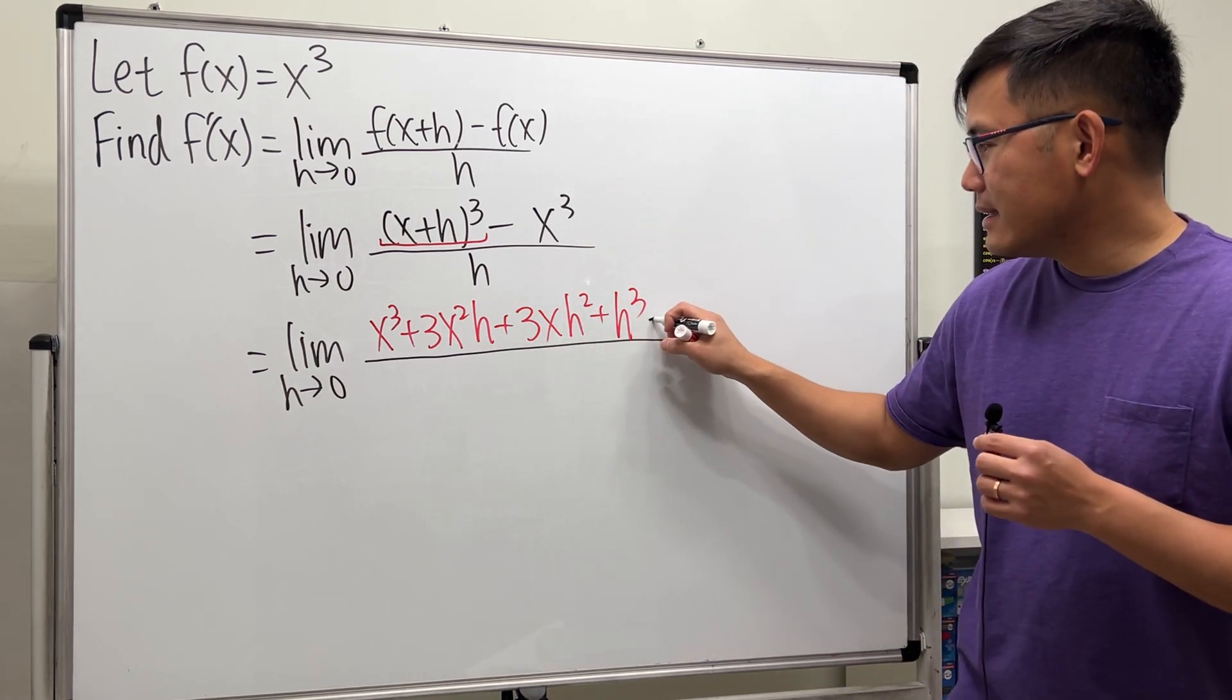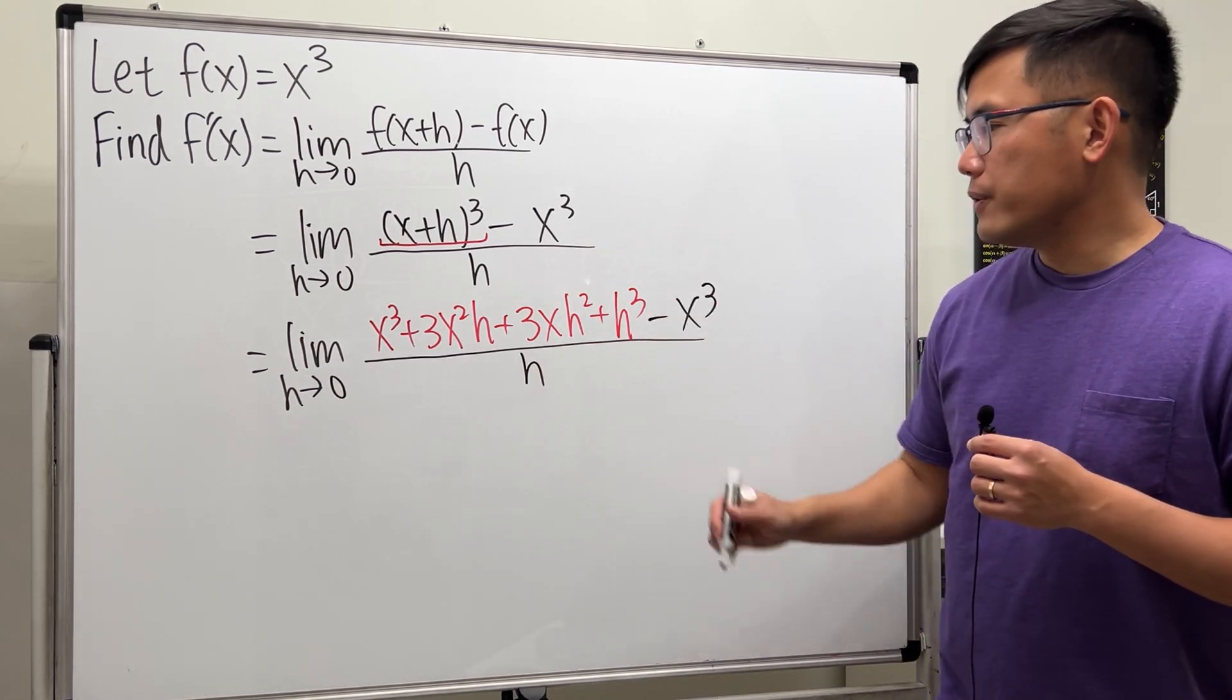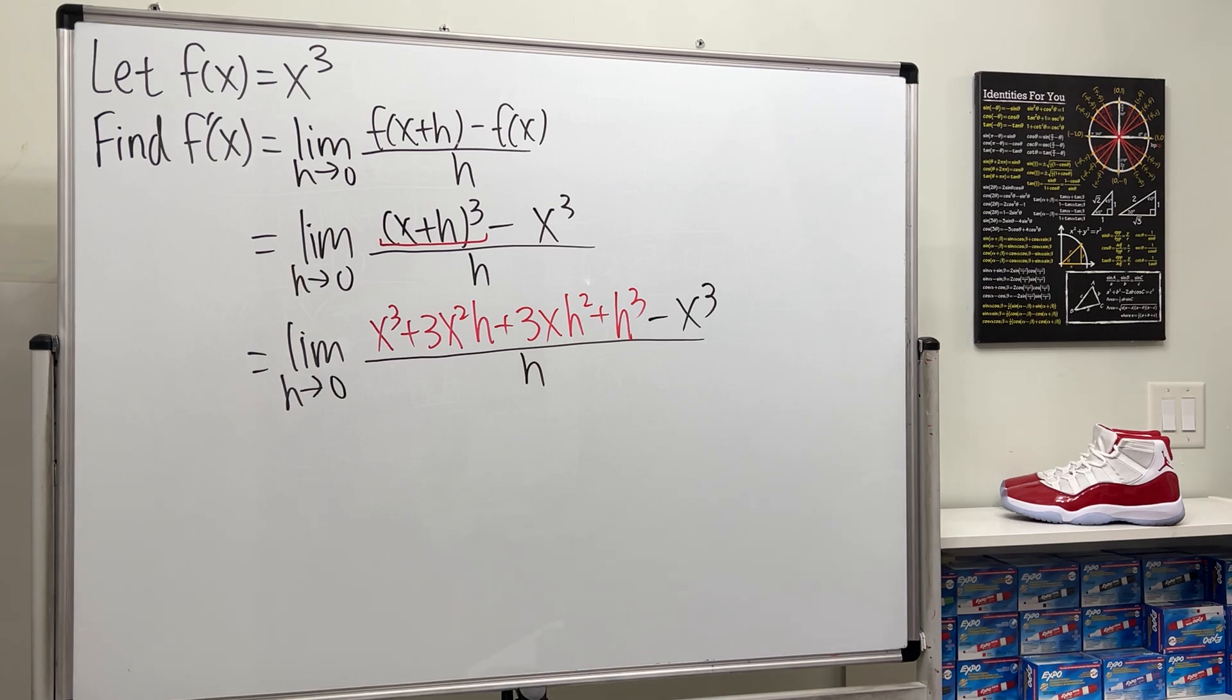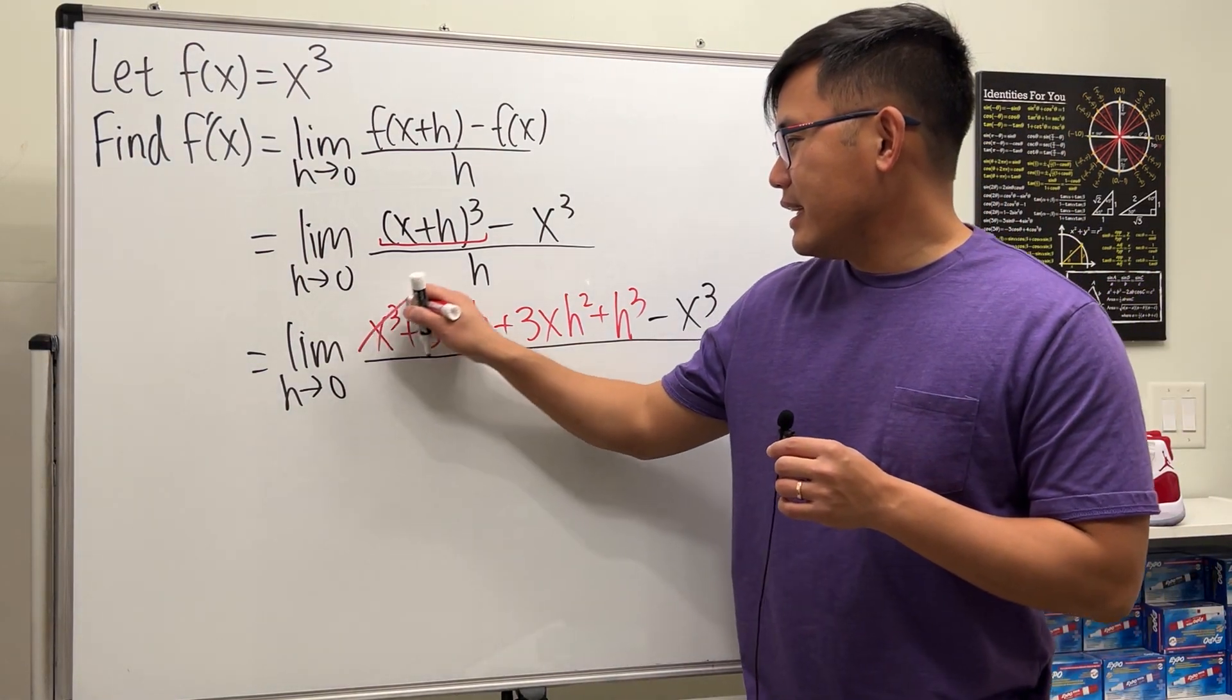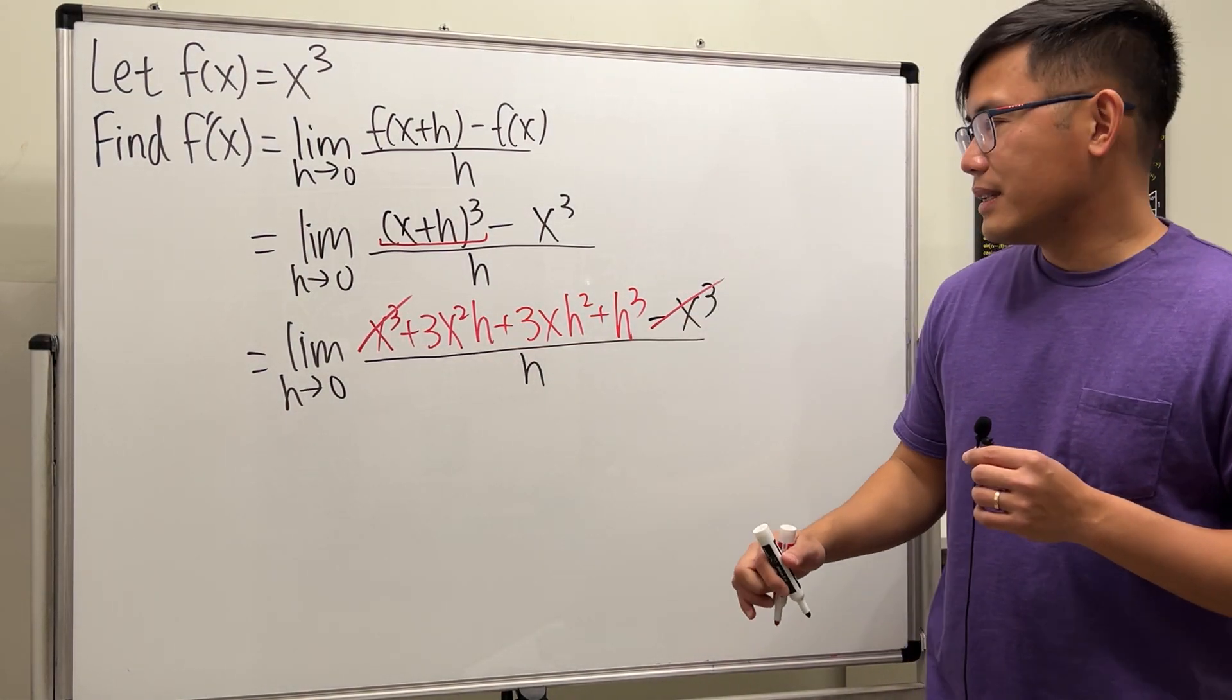And then minus x to the third power, all over h. Now if you take a look right here, we see that the x to the third power minus x to the third power, they are canceled. That's good.